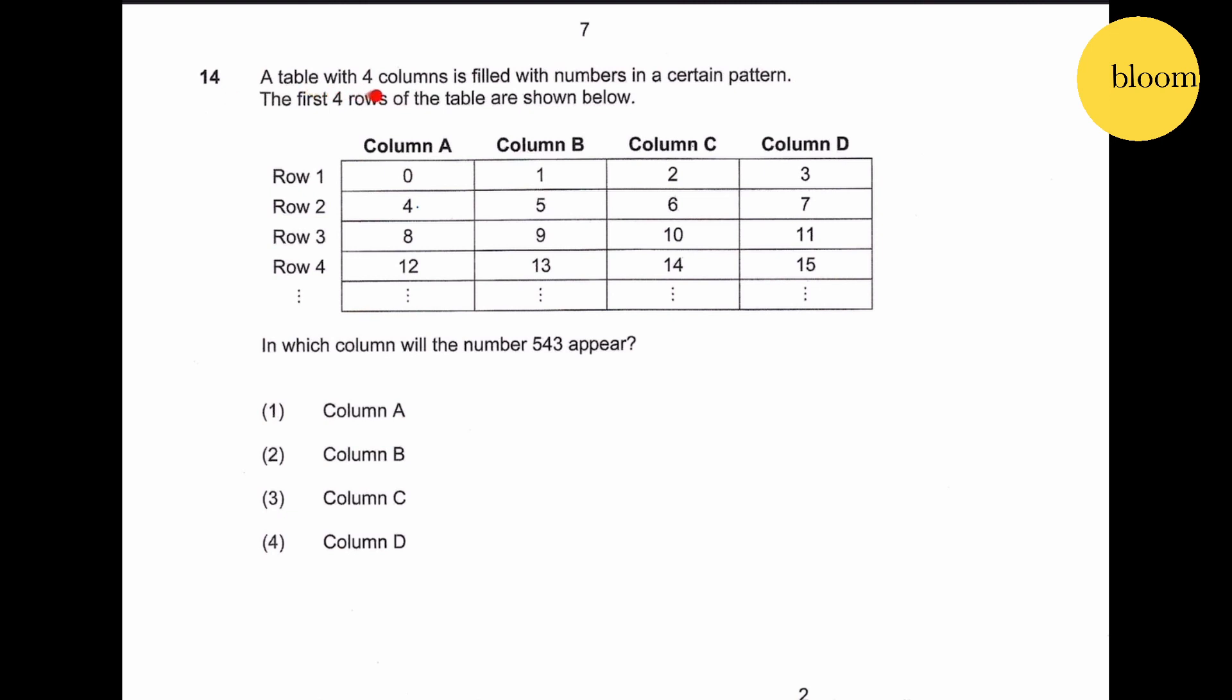Question 14: a table with 4 columns is filled with numbers in a certain pattern. The first 4 rows of the tables are shown below. In which column will the number 543 appear?